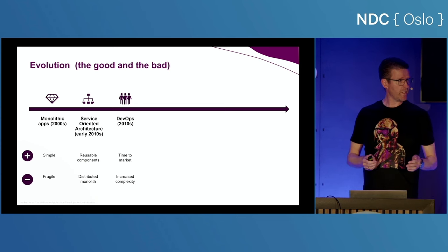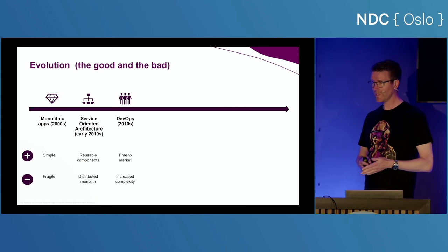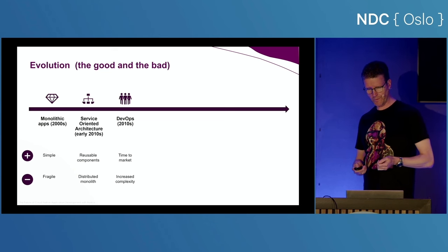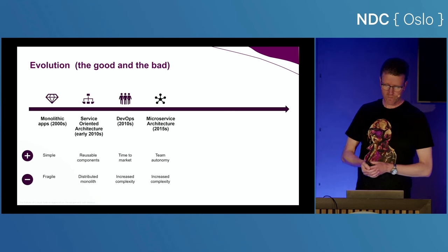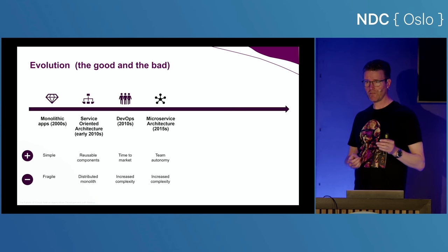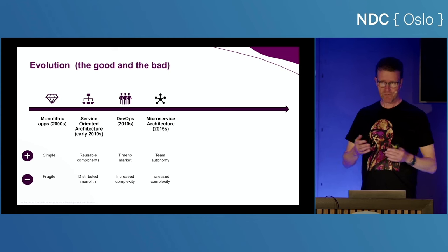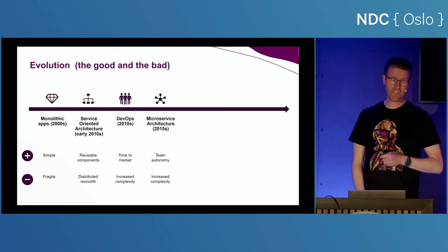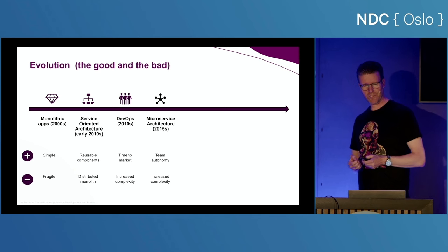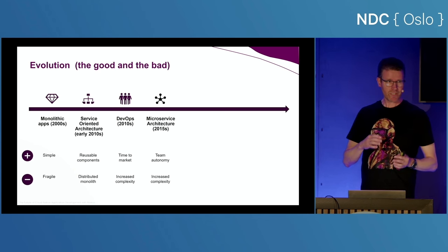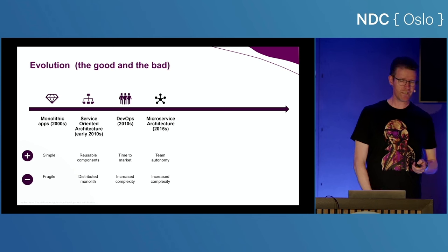DevOps really increased the velocity and agility of teams, at the cost of teams needing to have more knowledge about each other's work. We started to do microservices as well. And if you do microservices right — and it is so hard done right — it did deliver teams a lot of autonomy, where they could choose their own technology. But you have to know how to run all these services, again increasing complexity.